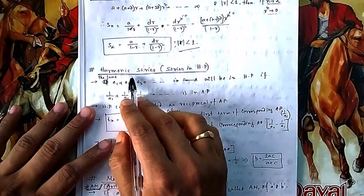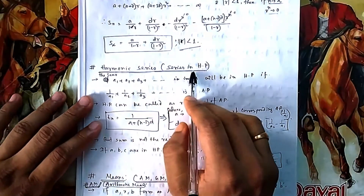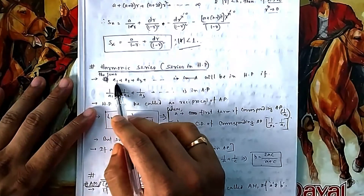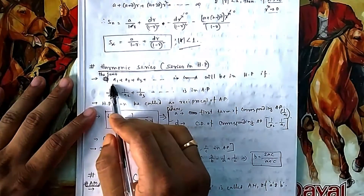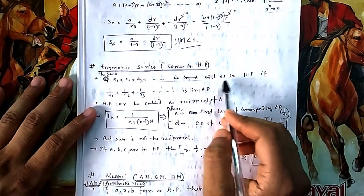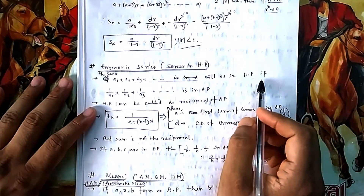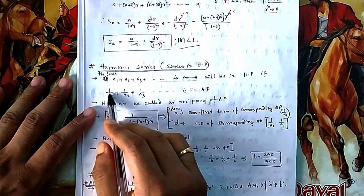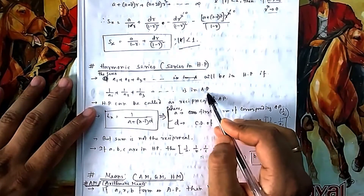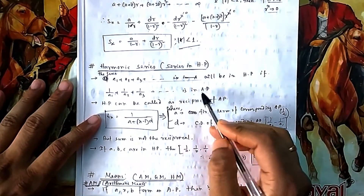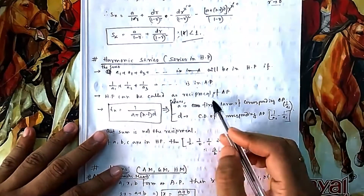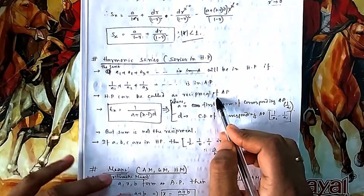The next series is the harmonic series, or harmonic progression (HP), which you have already seen. HP is the reciprocal of an AP — if a series is in HP, then the reciprocal of each term forms an AP.